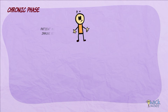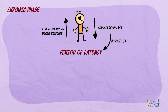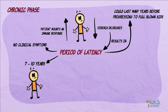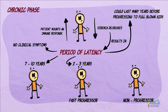After the patient starts mounting an immune response, viremia decreases and there is a period of latency without any clinical symptoms. This period of latency can last for many years — at least 7 to 10 years before progressing to full-blown AIDS. However, there are patients who are fast progressors, where the latency period lasts only 2 to 3 years. There is also a small population of long-term non-progressors, where latency can last more than 10 years.